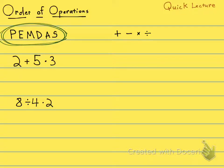And some people know it as please excuse my dear Aunt Sally. Most people have heard of that before. And what it stands for is the P stands for parentheses, the E is exponents, the M is multiplication, the D is division, the A is addition, and the S is subtraction.